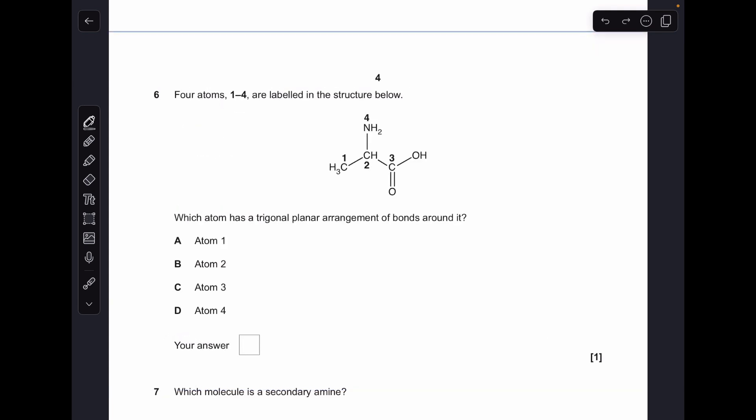Question six. I'll run through the four atoms and say what the arrangement is around them. Atom one is tetrahedral because it has four bonding regions. Two is also tetrahedral because you've got the hydrogen, the two bonds to carbon, and the bond to nitrogen. Number three has three bonding regions around there. Remember, double bonds count as one region. So that's trigonal planar, and that's the answer. Atom four has a lone pair on the nitrogen and three bonding regions, so that's pyramidal. Anyway, C is the answer.